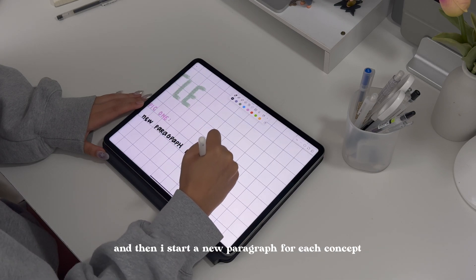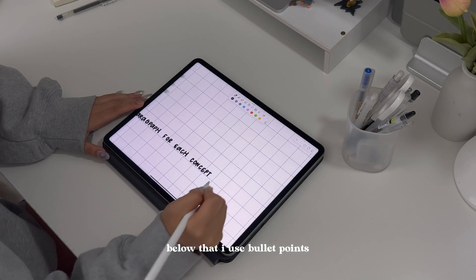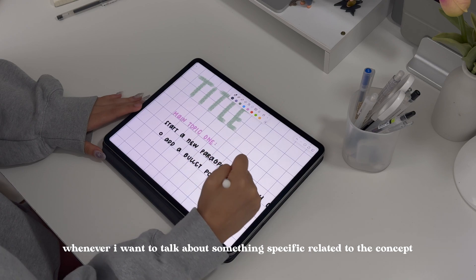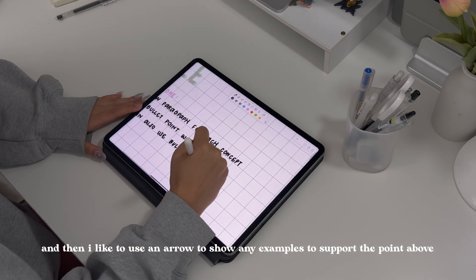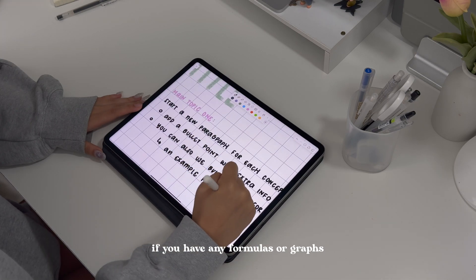Then I start a new paragraph for each concept below that. I use bullet points and indent them whenever I want to talk about something specific related to the concept. I like to use an arrow to show any examples to support the point above.